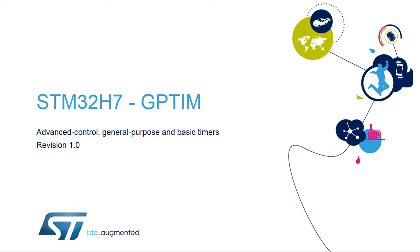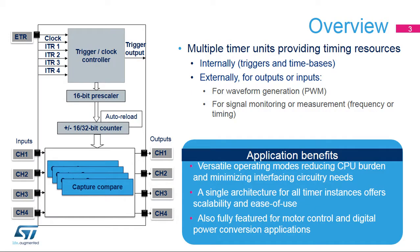Hello, and welcome to this presentation on the Advanced Control, General Purpose, and Basic Timers embedded in STM32H7 microcontrollers. It covers their main features, which are useful for handling any timing-related events, generating waveforms, and measuring the timing characteristics of input signals. The STM32 embeds multiple timers, providing timing resources for software or hardware tasks.